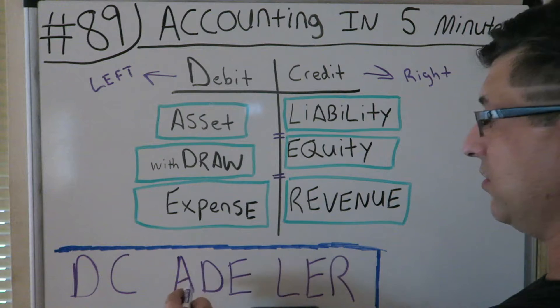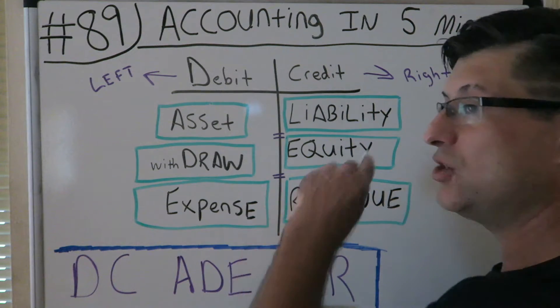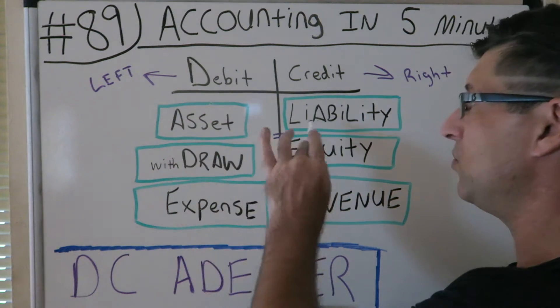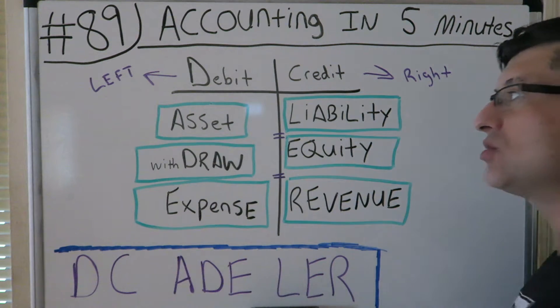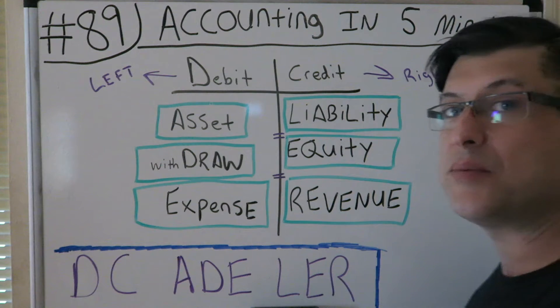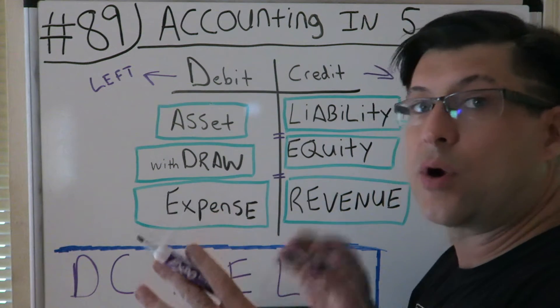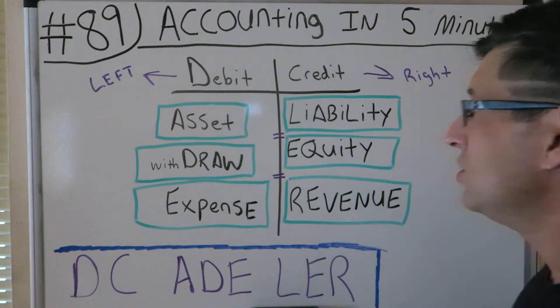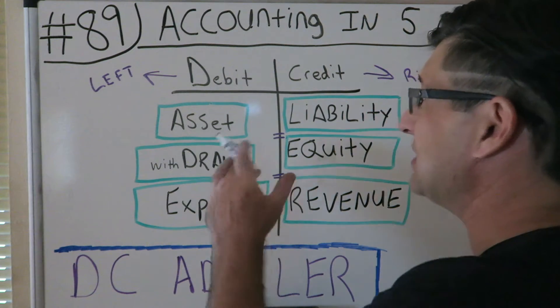It's going to be either an AID or a URL — any transaction is going to be one of these six. And it's also going to be either a debit or a credit.